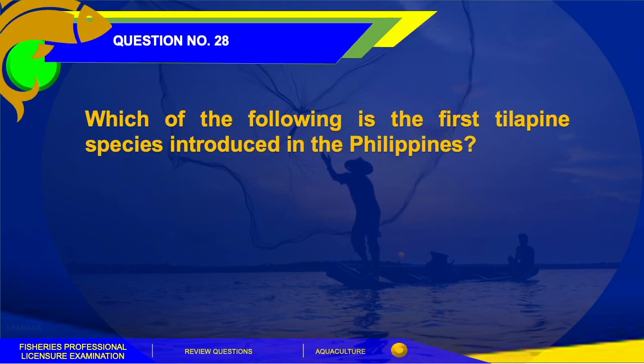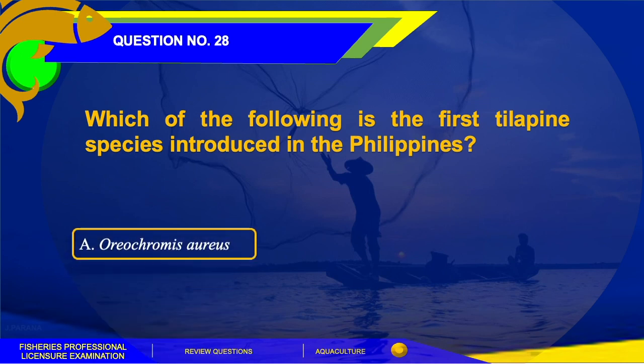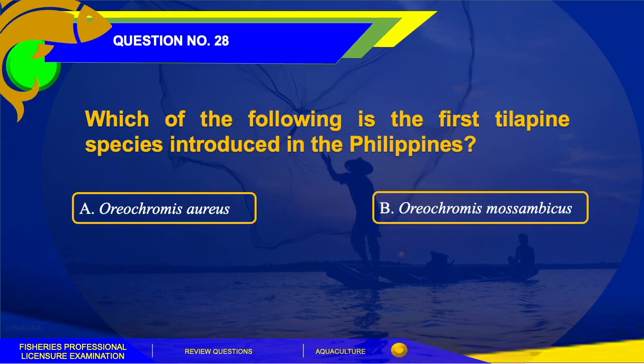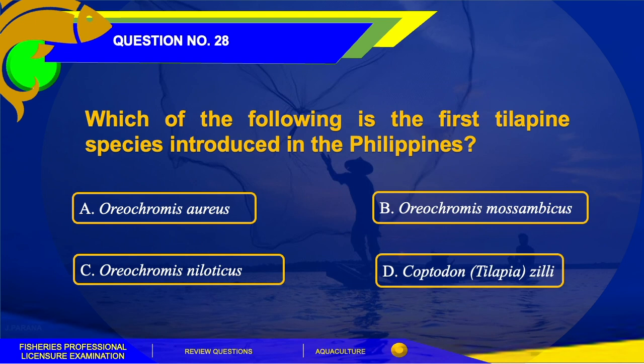Question number 28. Which of the following is the first tilapia species introduced in the Philippines? The options are: A. Oreochromis aureus, B. Oreochromis mossambicus, C. Oreochromis niloticus, or D. Coptodon or Tilapia zillii. The answer is letter B, Oreochromis mossambicus.